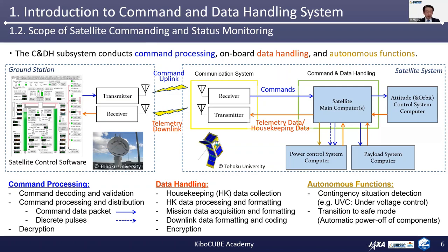In safe mode, the actual control mode usually needs to be switched to safe mode to ensure enough power generation by the solar panels. In the following slides, I'd like to explain about these three types of C&DH processing in detail.